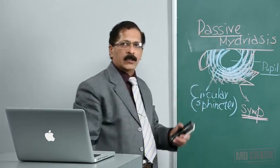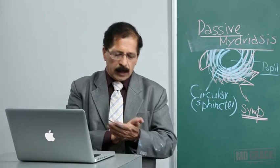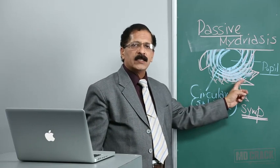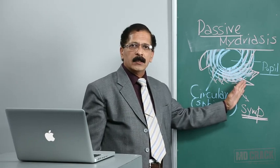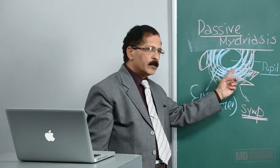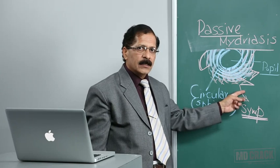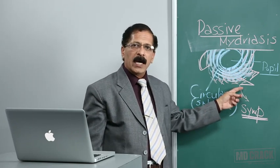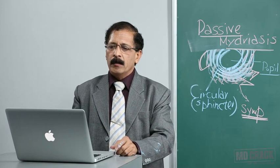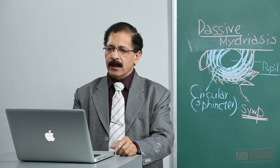To contrast: sympathomimetic drugs act on the radial muscle of the iris via alpha-1 adrenoreceptors and actively contract it — that mydriasis is active. When atropine acts, it paralyzes the sphincter pupilli only and does not touch the radial muscle; the dilation brought about by the radial muscle on its own is therefore passive mydriasis. So we say atropine produces passive mydriasis. The slide confirms: atropine paralyzes the sphincter pupilli, the dilator pupilli goes into overactivity, leading to passive mydriasis.